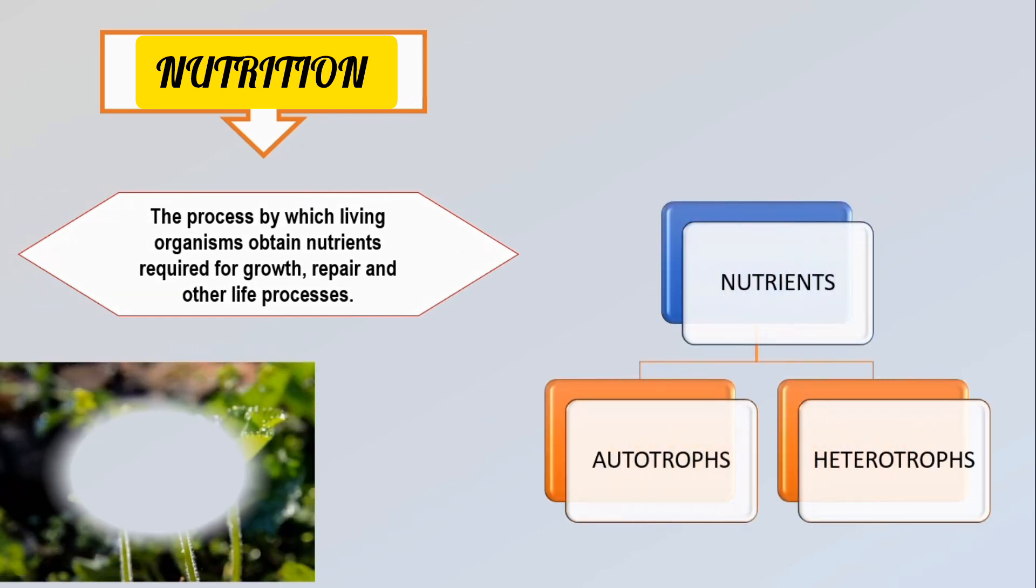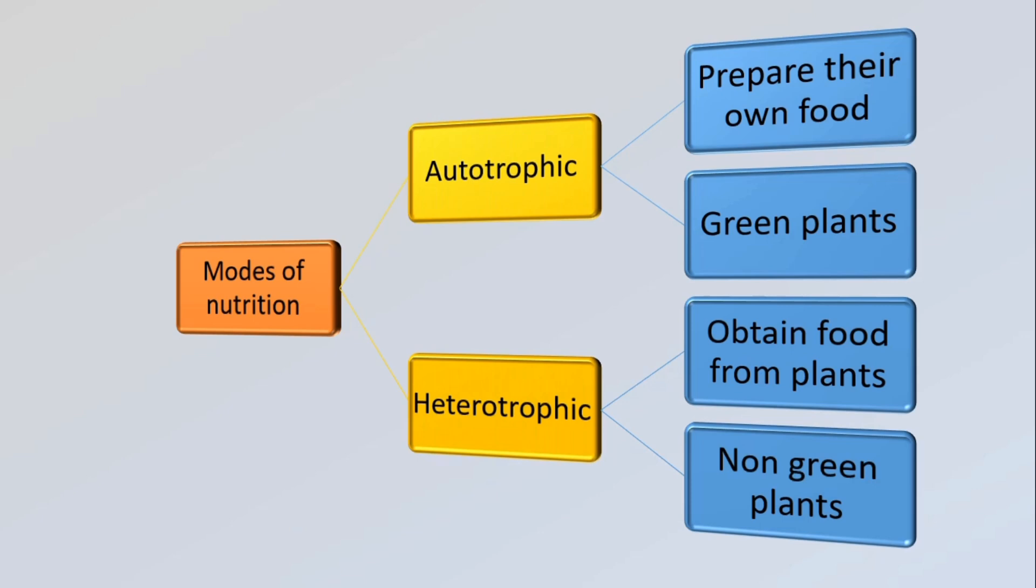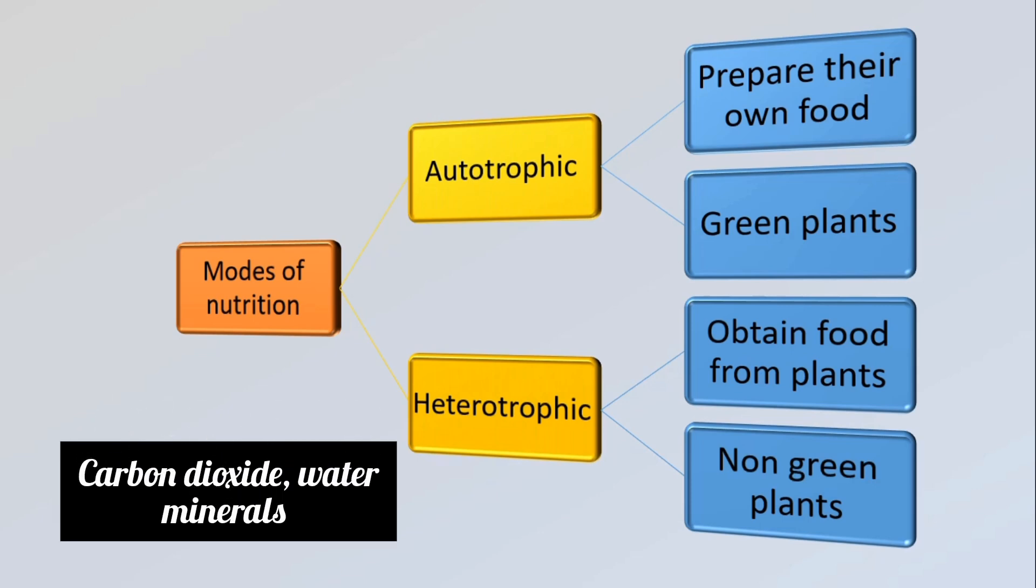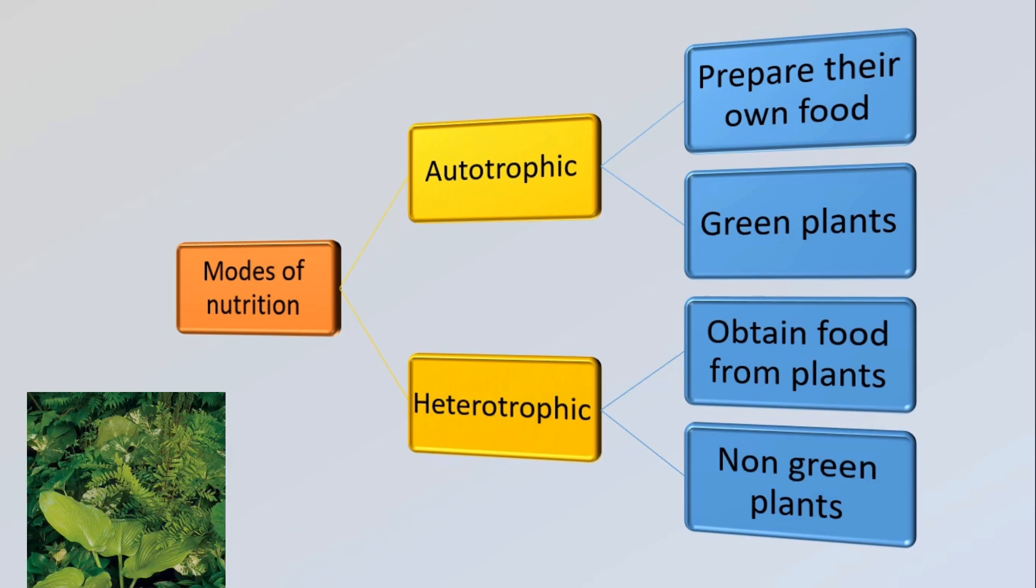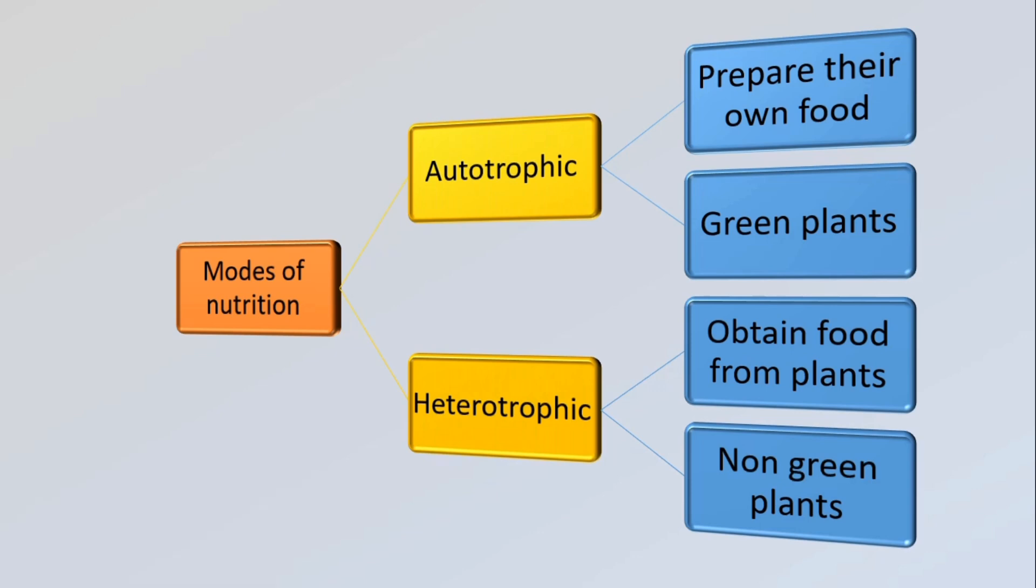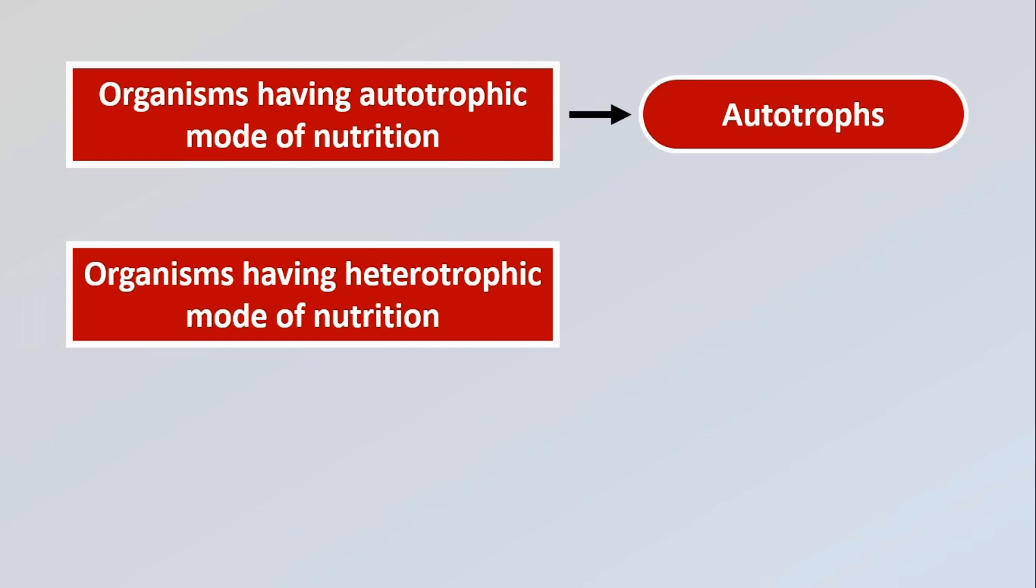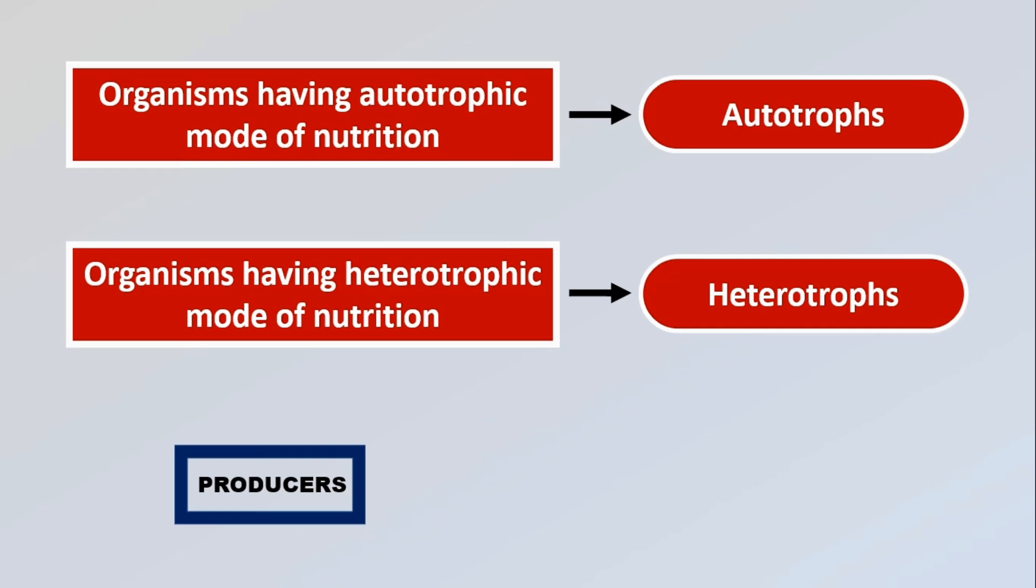Based on the way organisms obtain nutrition, they are grouped as autotrophs or heterotrophs. There are two modes of nutrition in plants: autotrophic and heterotrophic. Autotrophic nutrition is when an organism makes its own food from simple substances like carbon dioxide, water and minerals. Heterotrophic nutrition is when an organism obtains ready-made food prepared by green plants directly or indirectly. Autotrophs are also known as producers while heterotrophs are known as consumers.